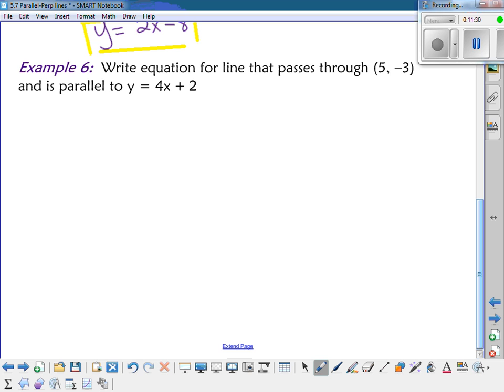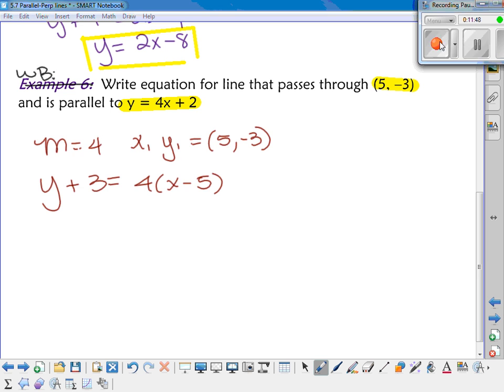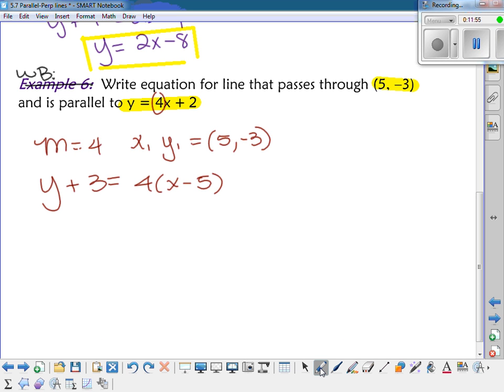Okay, here's one more for your whiteboards. You're going to find the equation that passes through 5, negative 3, and it's parallel to Y equals 4X plus 2. Okay, so the slope of the original line was 4. And your X sub 1, Y sub 1 was 5 and negative 3. So Y plus 3 equals 4 times X minus 5. You distribute the 4, and you get 4X minus 20. And then we subtract 3 from both sides, and we get that Y is equal to 4X minus 23.